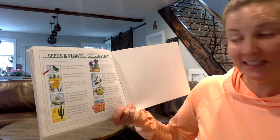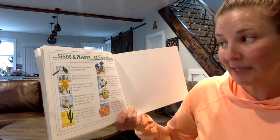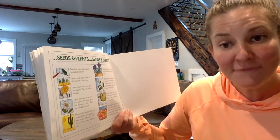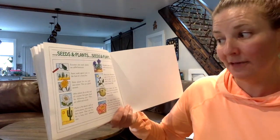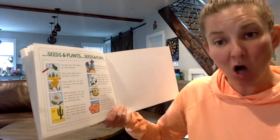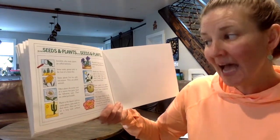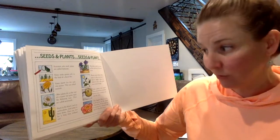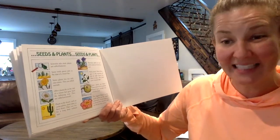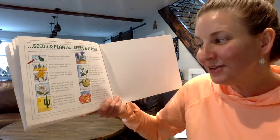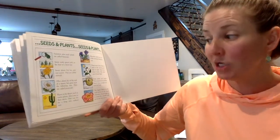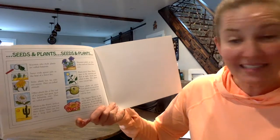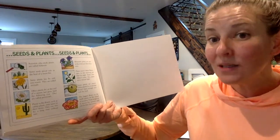Seeds and plants. Scientists who study plants are called botanists. Some seeds sprout only in the heat of a forest fire. Some plants live for only one season — they're called annuals. Other plants die at the end of a season, but they grow back the following years — they are called perennials. Plants in deserts, such as cactus plants, can store water in their stems and can live for a long time without rain. Mountain plants are short so the wind can't blow them over.